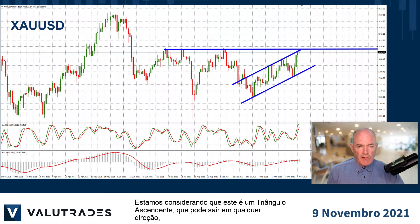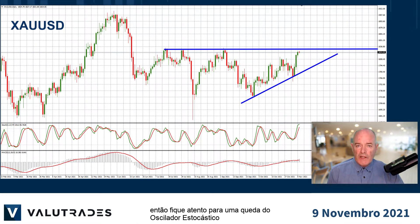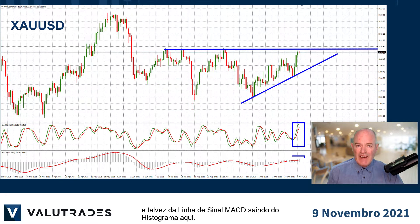We are considering this to be an ascending triangle which could break out either way, so watch for a downturn on the stochastic oscillator and perhaps the MACD signal line exiting the histogram here.